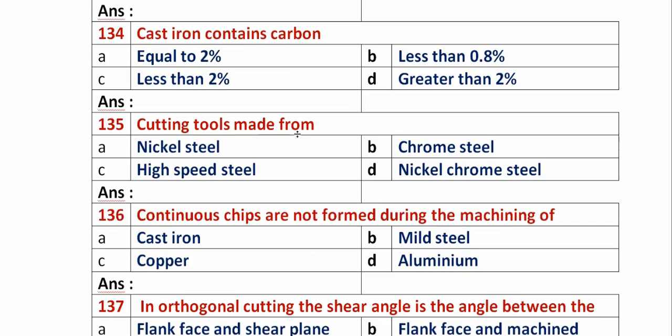Question 134: Cast iron contains carbon — Option A: equal to 2%. Option B: less than 0.8%. Option C: less than 2%. Option D: greater than 2%. Cast iron has the maximum percentage of carbon among common metals. So option D, greater than 2%, is the right answer.